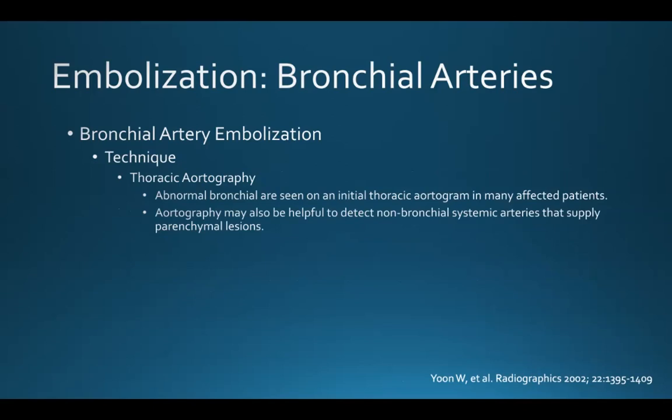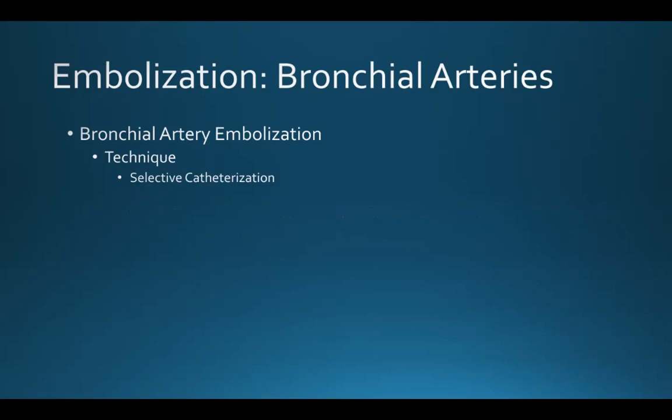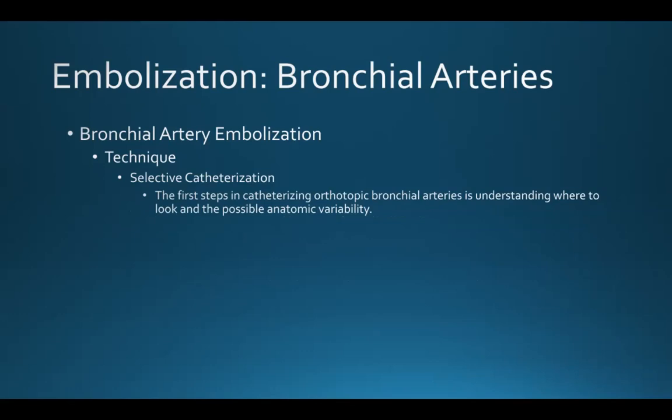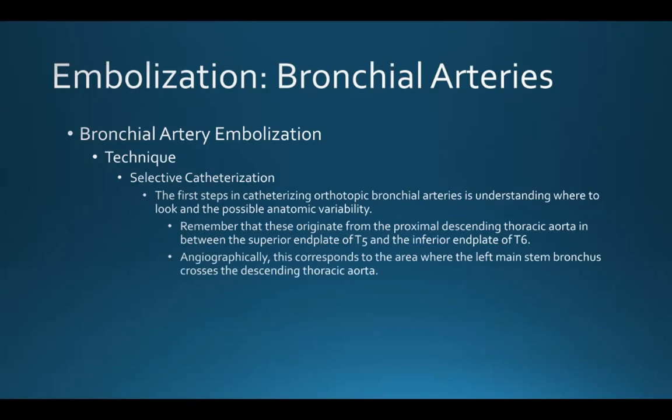An embolization procedure typically starts with a thoracic aortogram. Abnormal bronchial arteries can be seen on the initial aortogram in many affected patients, and aortography can also be helpful to detect non-bronchial systemic arteries that can supply parenchymal lesions. After the aortogram, we move to selective catheterization. The first steps in catheterizing orthotopic bronchial arteries is understanding where to look and the possible anatomic variability. Remember that these vessels originate from the proximal descending thoracic aorta between the superior endplate of T5 and the inferior endplate of T6, which angiographically corresponds to the area where the left main stem bronchus crosses the descending thoracic aorta.